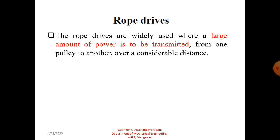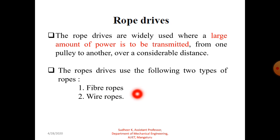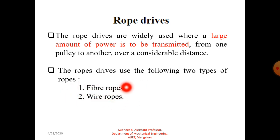In rope drive there are two types of ropes we are going to use. The first is fiber rope — as the name implies, the rope is made up of natural fibers. The second one is called wire rope. Fiber ropes operate successfully when the pulleys are about 60 meters apart. But wire ropes can be used when the distance between the two pulleys is up to 150 meters. These two are the important types of ropes used in rope drives to transmit large amounts of power from one shaft to another.